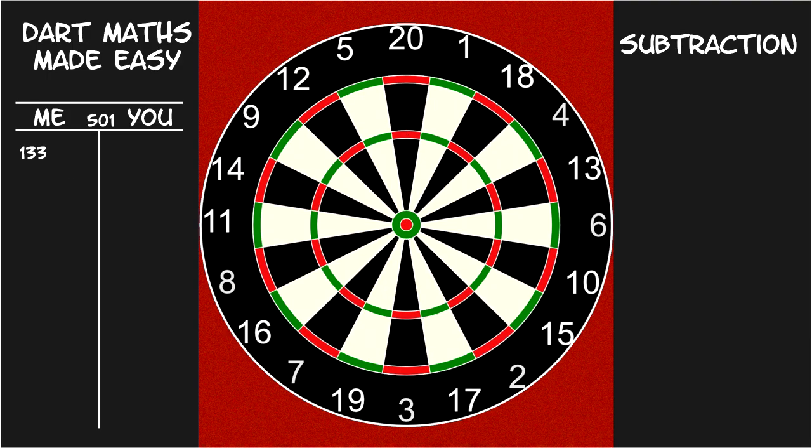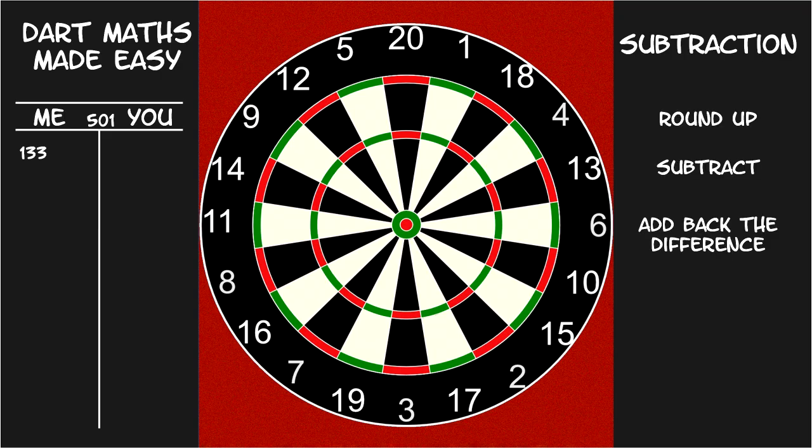Okay, let's talk subtraction. The trick here is similar to the trick used for addition. We round up the number to be subtracted. Then, after subtracting it, we add back in the difference.